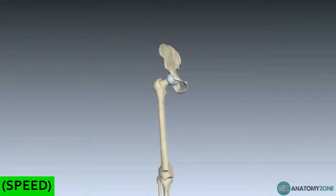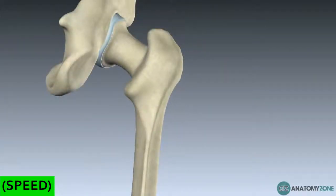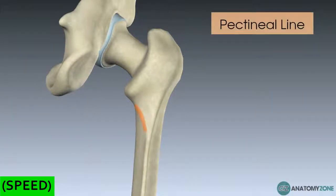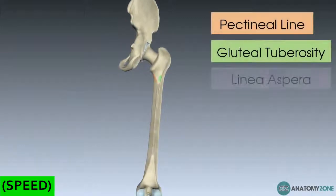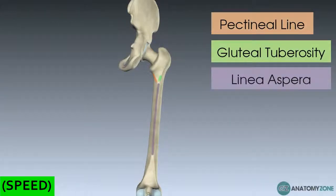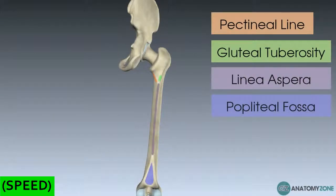There are a few structures to recognize on the shaft, linked together from top to bottom. First is the pectineal line, for the pectineus muscle. Next is the gluteal tuberosity, the attachment point for gluteus maximus. These two converge to form the linea aspera — the ridge running down the posterior femur and an attachment site for the hamstring muscles. Distally, the linea aspera widens to form the floor of the popliteal fossa, where the popliteus muscle lives, which is involved in the locking and unlocking mechanism of your knee.